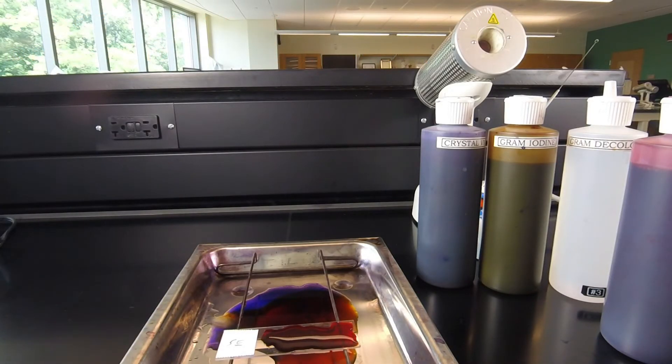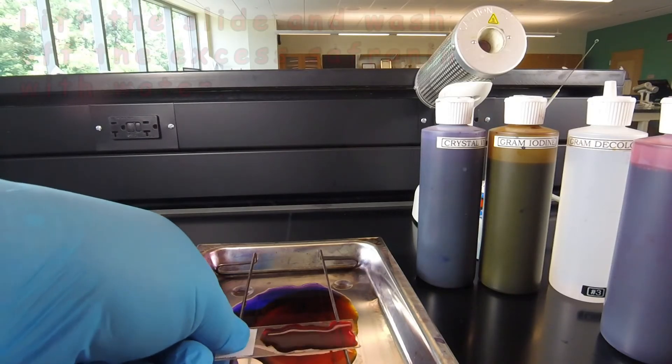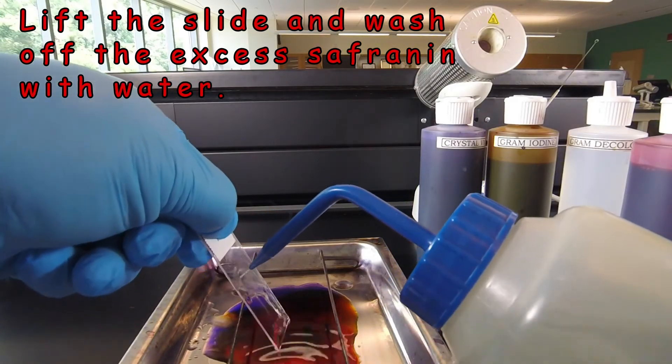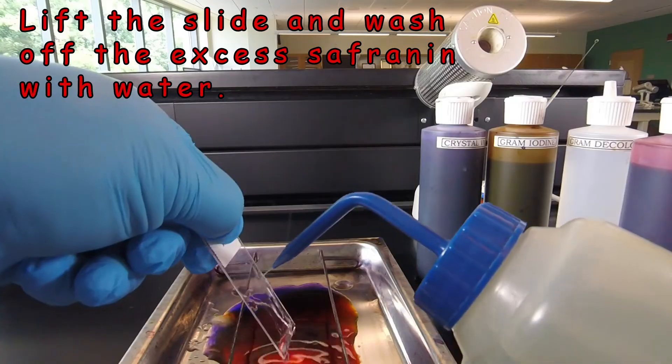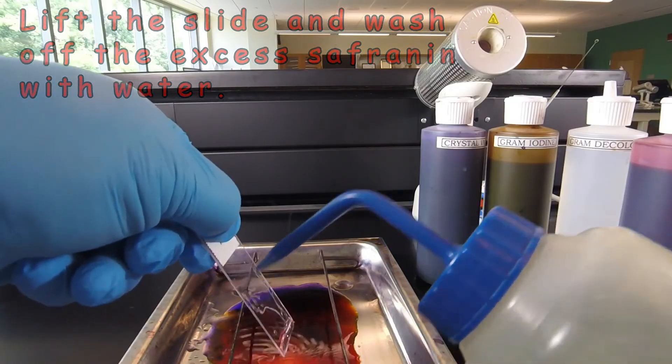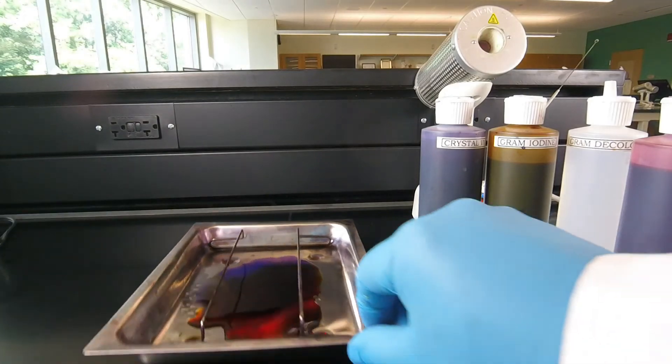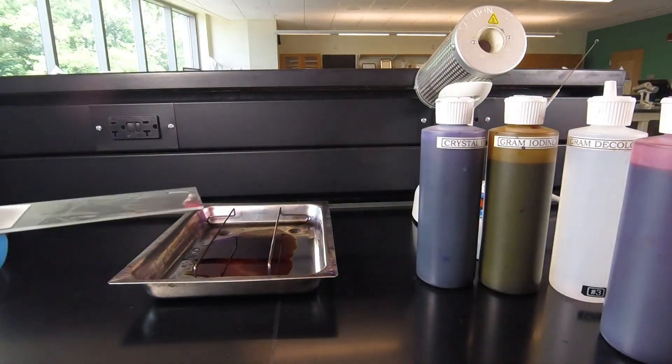Now that one minute's gone by, we're ready to wash off the excess Safranin from our slide. We pick the slide up, direct the water above the smear, watch the bottom of the slide for the red Safranin coming off. When that looks relatively clear, shake off the excess water, and at that point, we're ready to blot the slide.